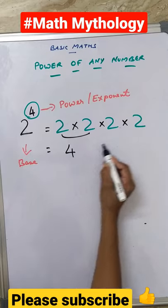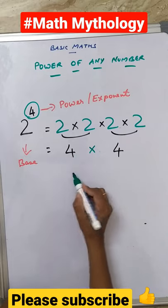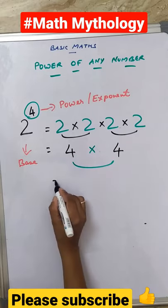So you get 2, 2's are 4 and 2, 2's are 4. Again multiplying 4 into 4, I get 16.